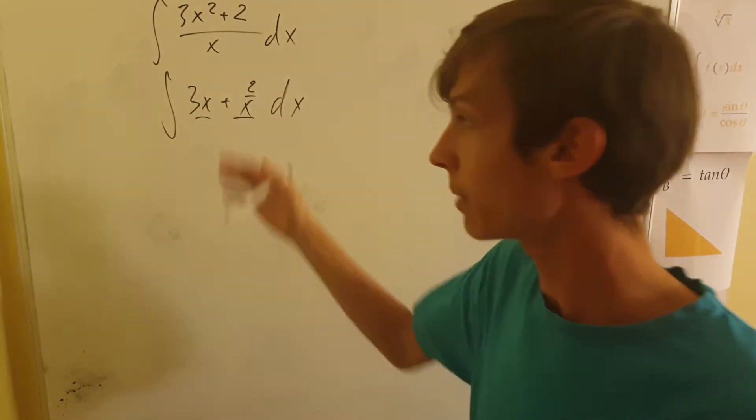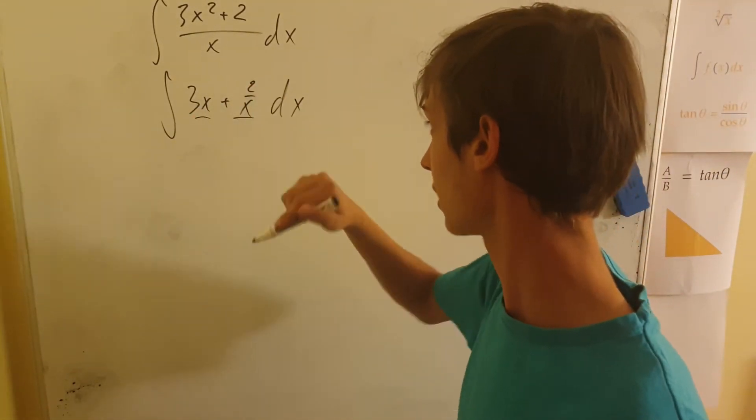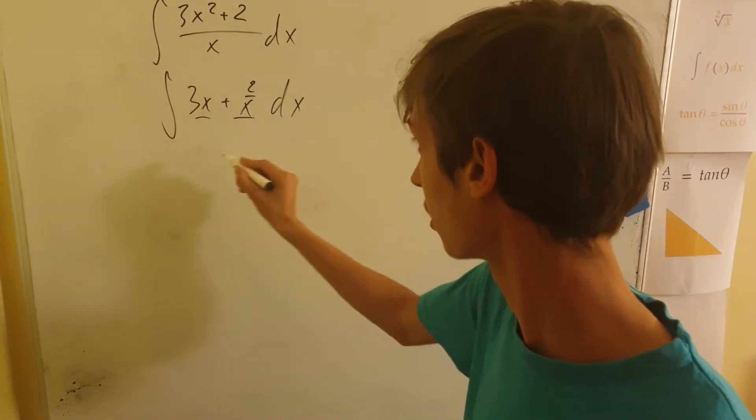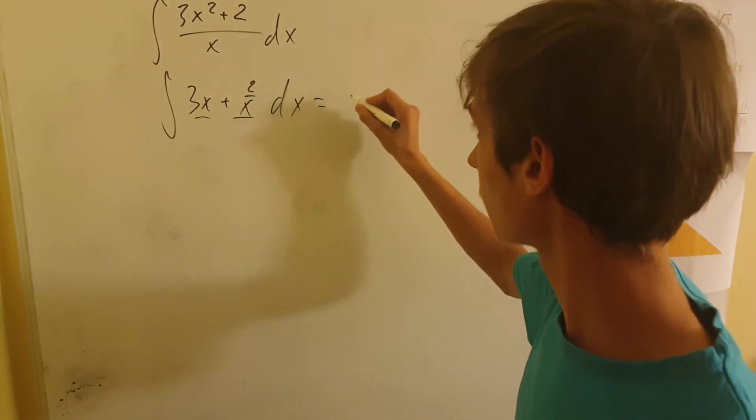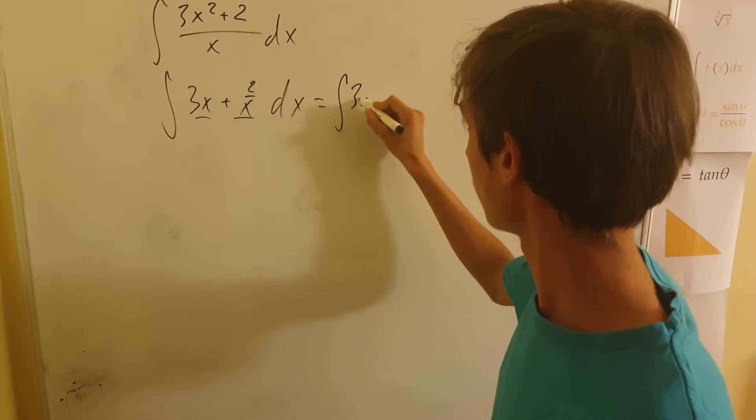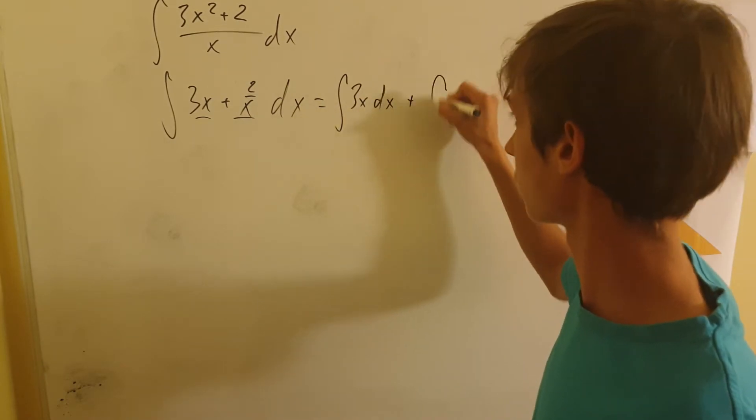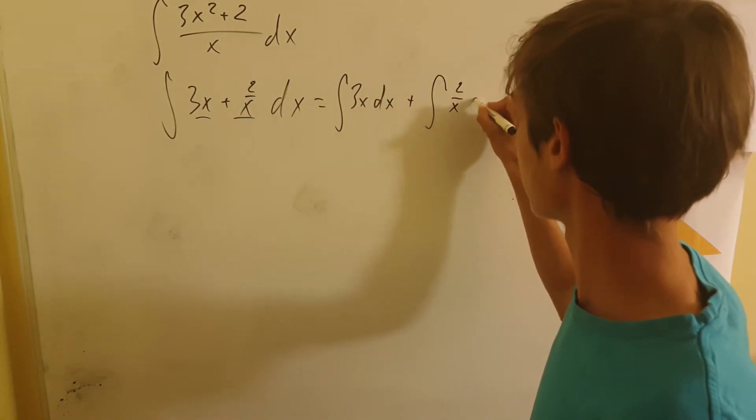And now this is addition, right? So we can make this two separate integrals, because this is linear addition. So let me do this. We have 3x dx plus 2 over x dx.